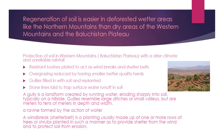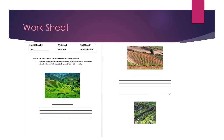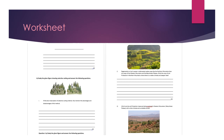Students, now we'll see the worksheet. Question number one: we need to adopt different farming techniques to reduce soil erosion — identify the given farming methods and write down a brief description of each. Some farming techniques used in mountainous areas of Pakistan are discussed in the video lesson, and you can also take help from page number 80. These techniques include terracing, contour plowing, and strip farming — you will write down the description of each.